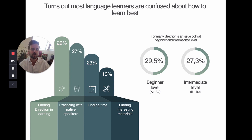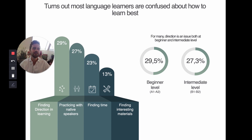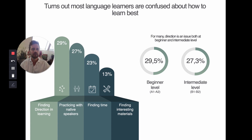When asked about the biggest obstacle, 29% of respondents cited finding direction in learning and knowing what to study — closely followed by practicing with native speakers and finding time and interesting materials. What's notable is that this issue doesn't just affect beginners. Even intermediate learners at B1 and B2 level — about 27.3% of them — reported that as their biggest challenge.